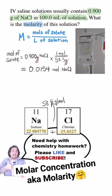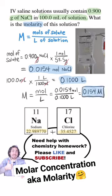Then I need to convert milliliters to liters. Just divide 100 milliliters by 1,000 since there's 1,000 milliliters per liter. Now divide the moles by the liters to get 0.154 molar.